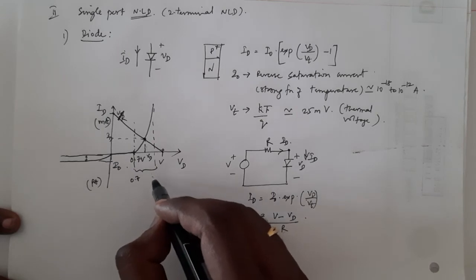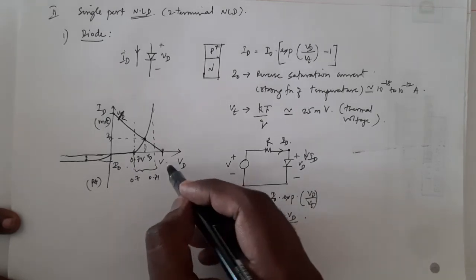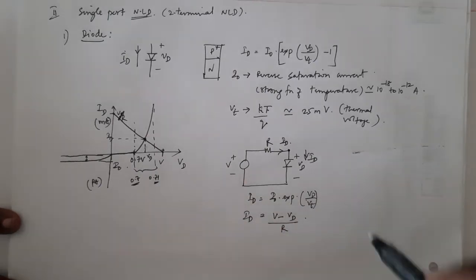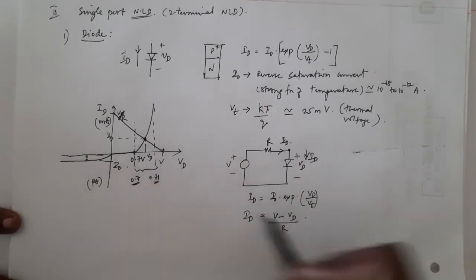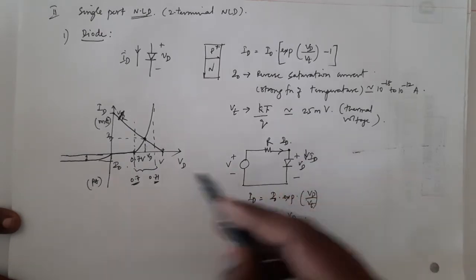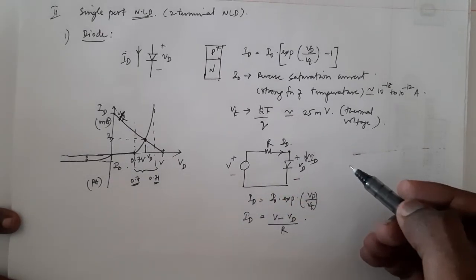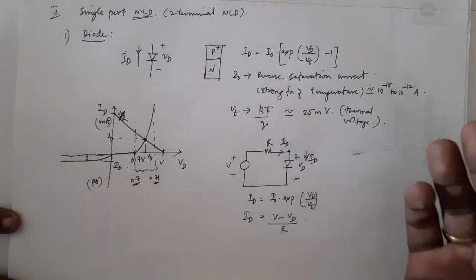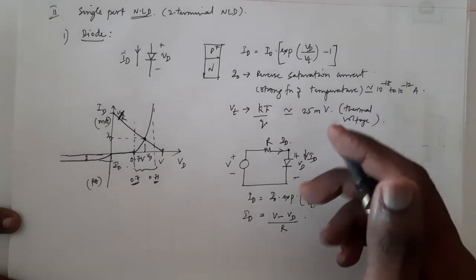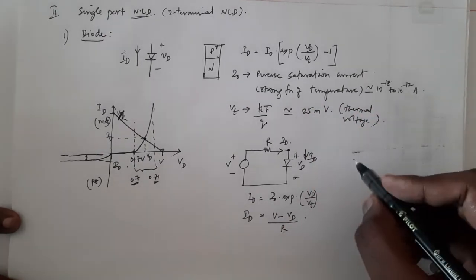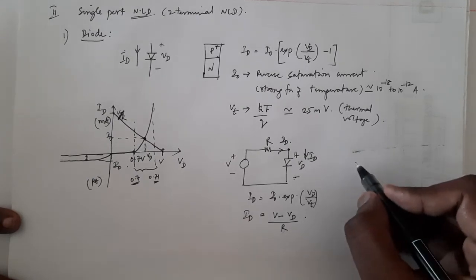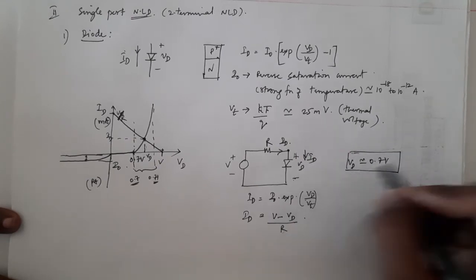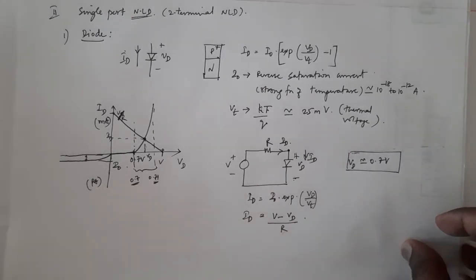In practice, the variation of VD beyond 0.7V is very small — maybe 0.71 or 0.72V — because current rises exponentially in a narrow voltage range. So rather than solving iteratively, we use the approximation that the voltage drop across the diode is VD ≈ 0.7V (or 0.65V as given). For most cases in this course, assuming VD ≈ 0.7V will give answers very close to the actual solution.